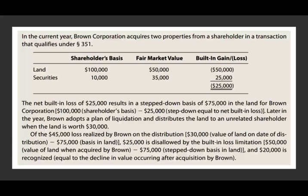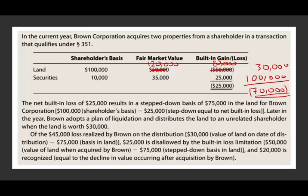Now let's change the example. Let's assume the fair market value rather than $50,000 is $120,000 at the time of contribution — meaning we don't have a built-in loss, we have a gain. Later, when we liquidate and sell the property, the fair market value is $30,000, giving us a loss of $70,000 against the $100,000 basis. If we distribute this property to an unrelated party in a liquidation, that's fine — we can recognize the entire loss of $70,000.